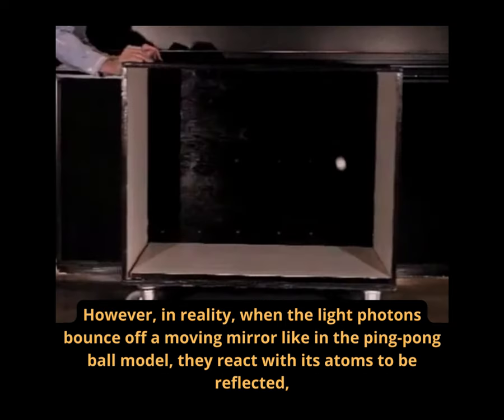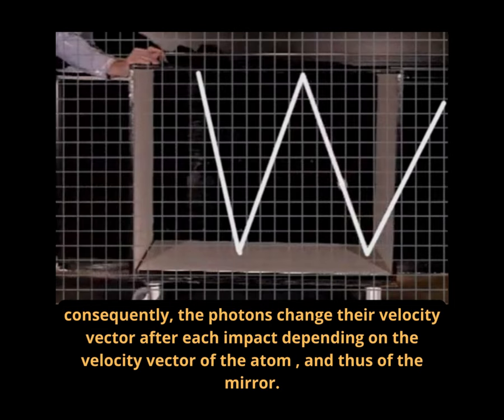However, in reality, when the light photons bounce off a moving mirror like in the ping-pong ball model, they react with its atoms to be reflected. Consequently, the photons change their velocity vector after each impact depending on the velocity vector of the atom, and thus of the mirror.